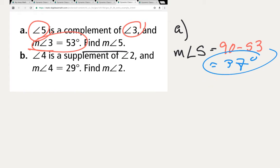And then we've got part B. And here we're dealing with supplementary angles, so 4 is a supplement of 2, measure of angle 4 is 29 degrees.